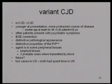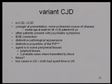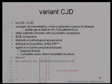Variant CJD, apparently due to BSE from cows getting into the human population, has been seen in Britain and has occurred in other countries including the US — though the two US cases both spent time in Britain. The median age of death is only 28; patients tend to present first with psychiatric syndromes. Unlike regular CJD, variant CJD can be found in peripheral lymphoid tissues — adenoids, appendix — and apparently in the blood, meaning it's almost certainly being transmitted by blood transfusion.